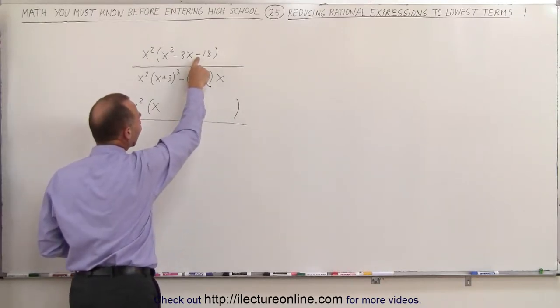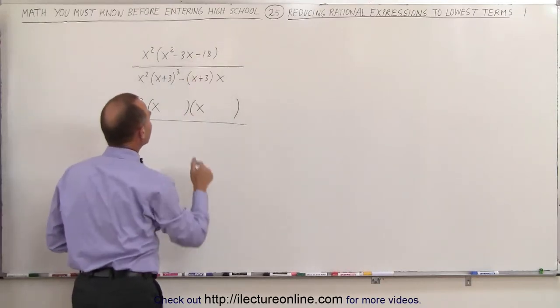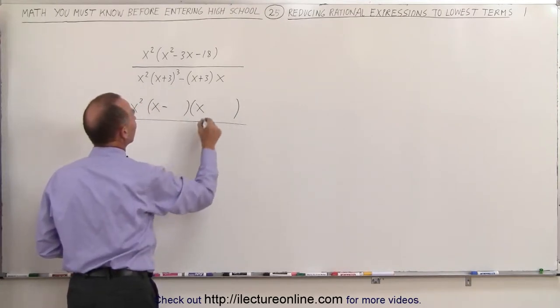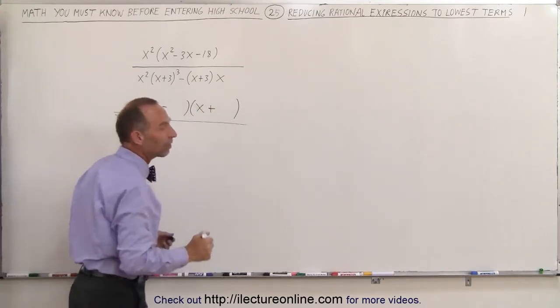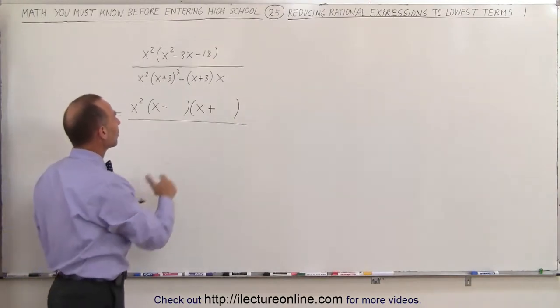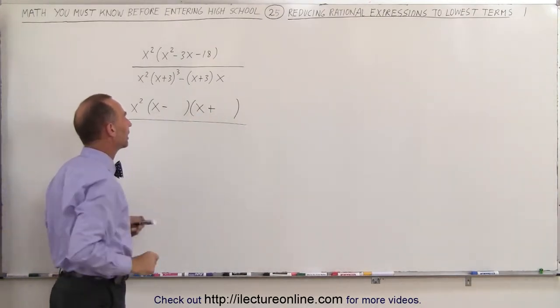Notice with the sign here, if this is negative, the only way to get a negative 18 here is if one of these numbers is negative and another one of the numbers is positive because you can get only a negative number when you multiply a negative and a positive number together.